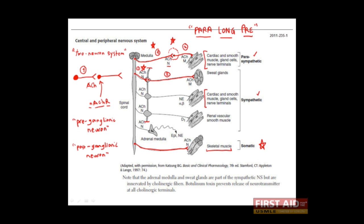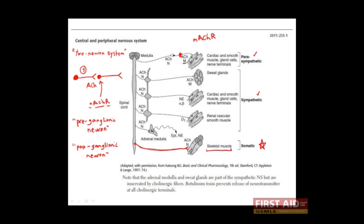Now let's talk more about the second or postganglionic neuron. In the parasympathetic division, the second neuron, just like the first, releases the neurotransmitter acetylcholine. The target tissues bind acetylcholine with the muscarinic acetylcholine receptor, abbreviated as M in the figure. This is different from what we saw in the ganglion, where the first neuron released acetylcholine which bound to nicotinic acetylcholine receptors. Each of the two neurons in the parasympathetic division both release acetylcholine.